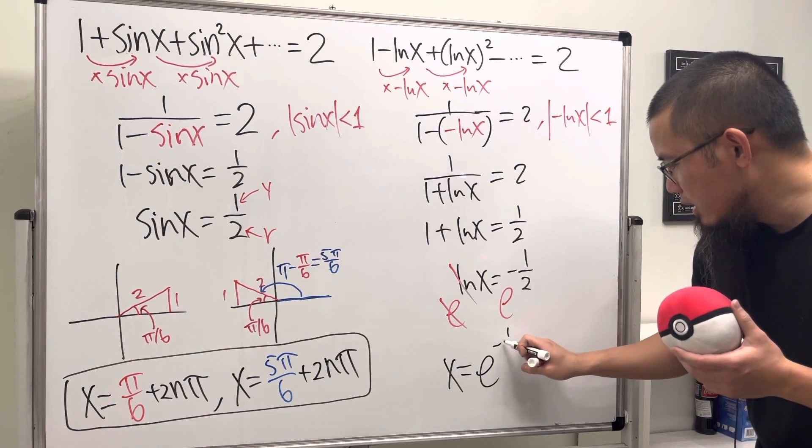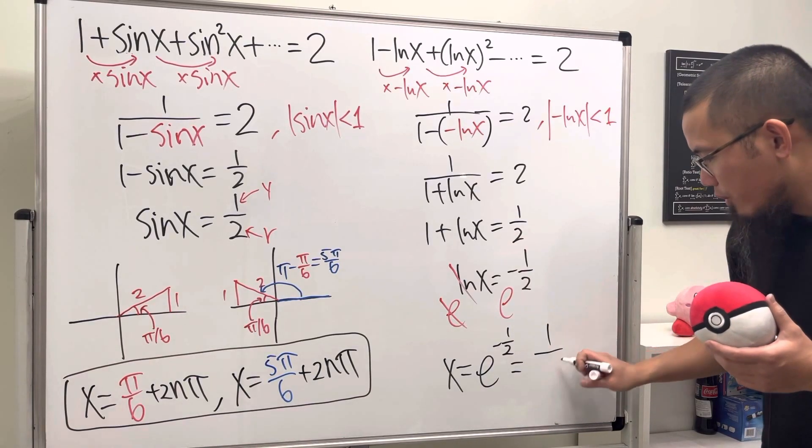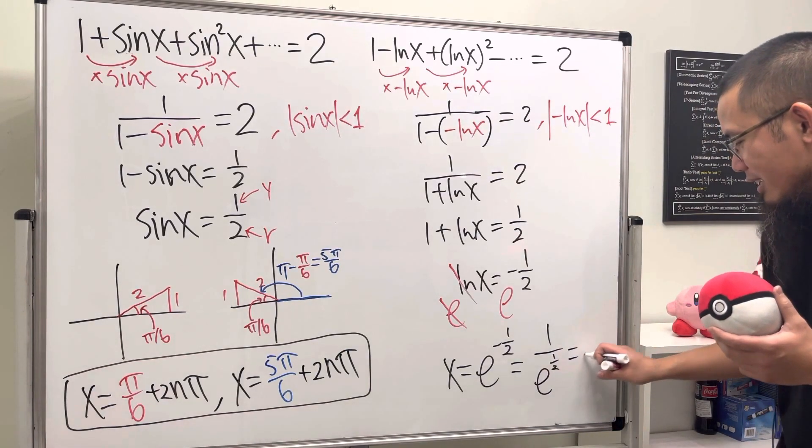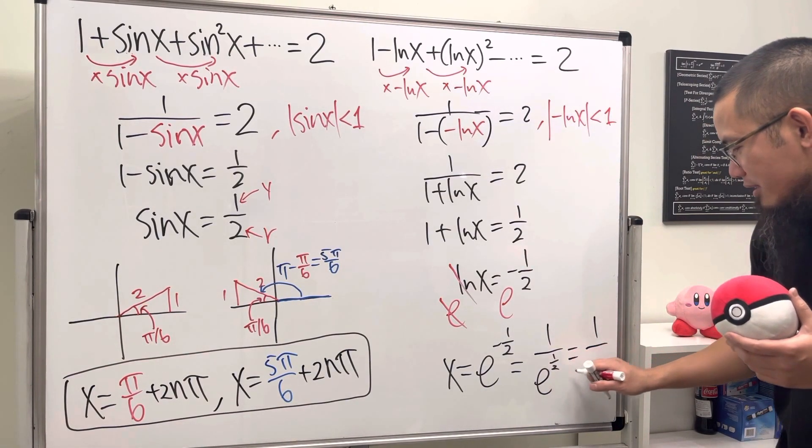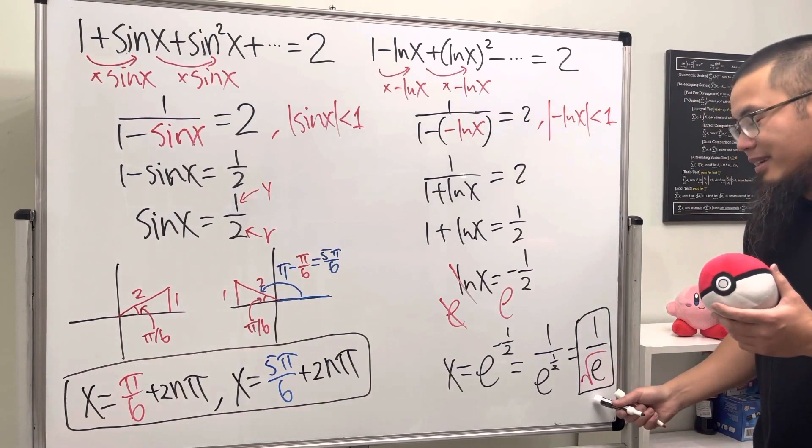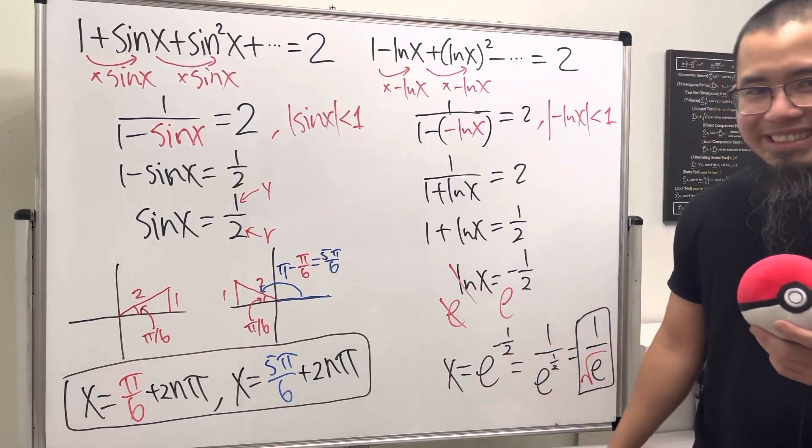And if you would like, you can write this down as one over e to the positive one half power here. Or if you would like, you can write this as one over—this right here, the same as square root of e. And I will leave the answer like this. All right, so hopefully this right here helps.